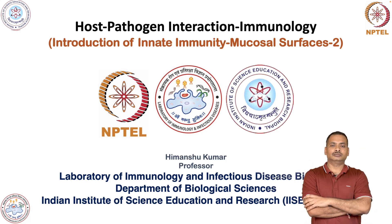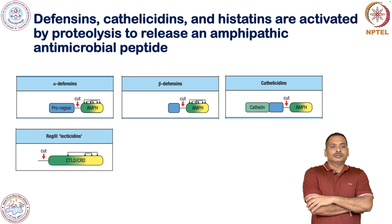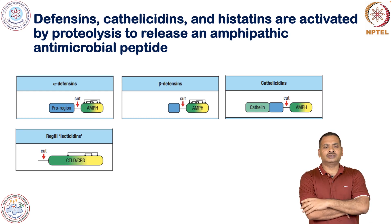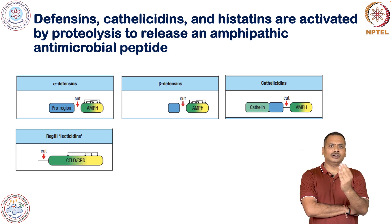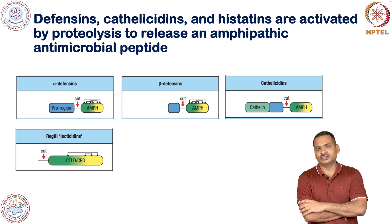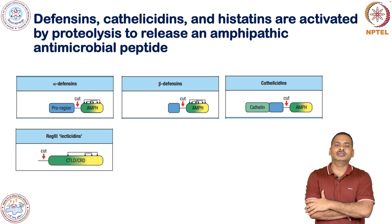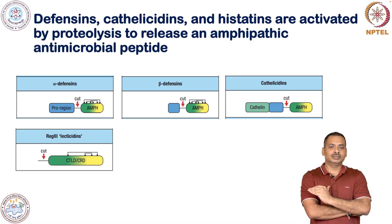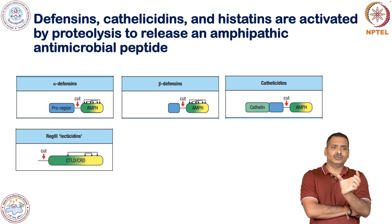I will also talk about the microbial barrier. There are various proteins like defensin, cathelicidin, and histatin, and basically all these proteins are produced in an inactive pro-form. Upon activation, they generate an amphipathic antimicrobial peptide which has both polar and non-polar regions. Alpha defensin has a pro region, and when it is enzymatically cleaved, it generates the active alpha defensin.